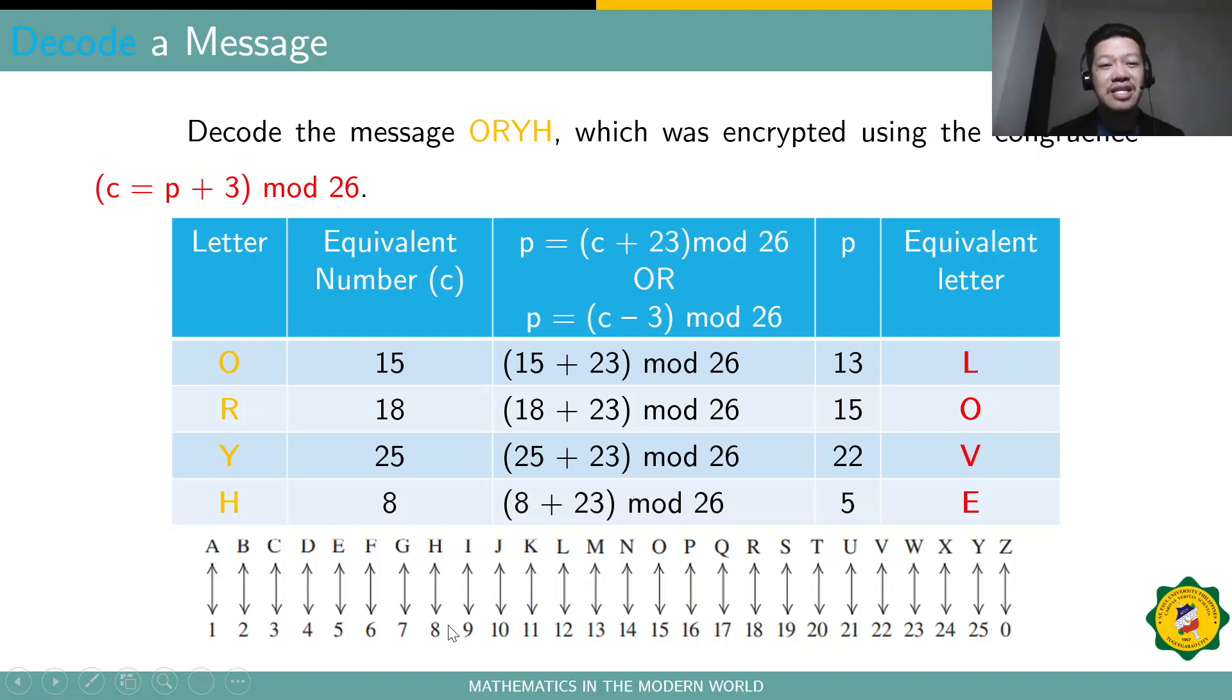So, for example, this is the one you receive as a receiver, and you want to decode it so that you know what's the real message of the sender. That's the first step. You get the numerical value of these letters. And then, you should know the decryption key. That is, you need to solve for P. A while ago, in encoding, we used C to encode it. Then now, we're going to convert the C into P. So, we need to solve for P. And how to get the formula? You can see here that P is equal to C plus 23 mod 26.